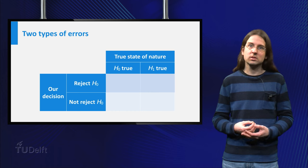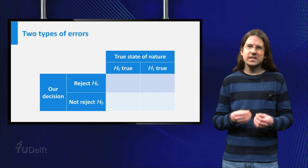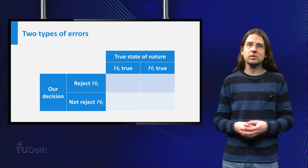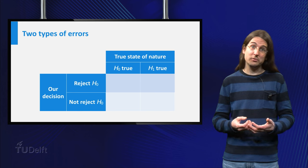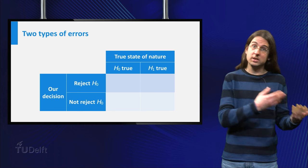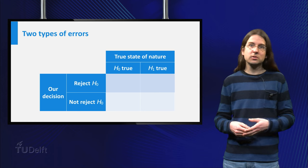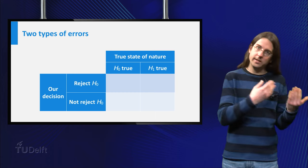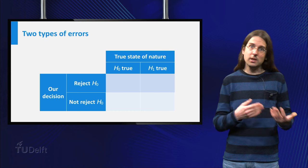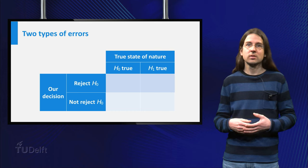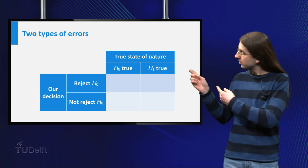Of course, we can make errors while making a test. Since we are dealing with probabilities, it is impossible to be absolutely certain of the outcome we find. There are two options for our outcome: we either reject H0 or we don't. And there are two options for what is really true: either H0 is true or H1 is true. Together this gives 2 times 2 equals 4 options, which we can conveniently depict in a table.